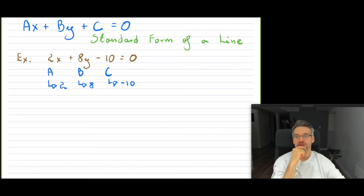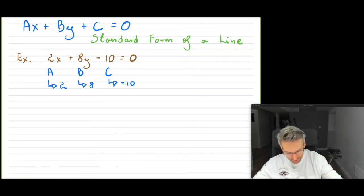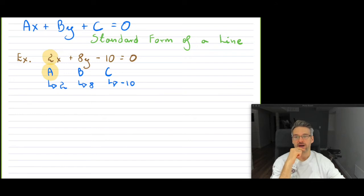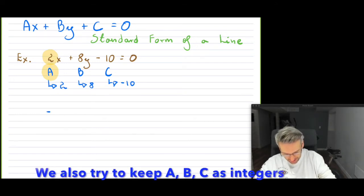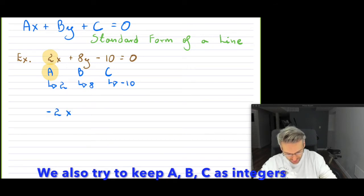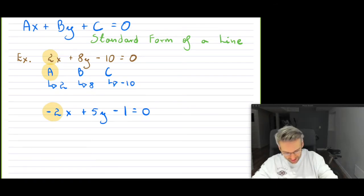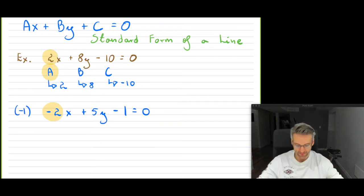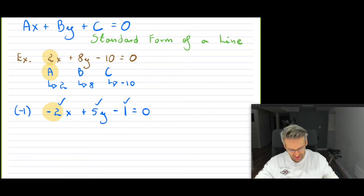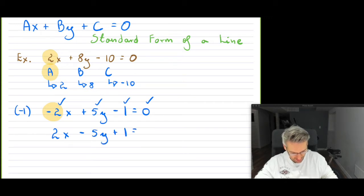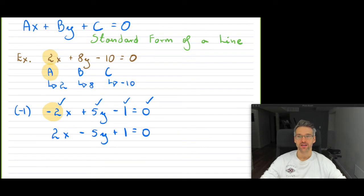One thing you should know in standard form is that we always make sure your A is positive. You wouldn't be able to leave it as something like negative 2X plus 5Y minus 1 equals zero. If you notice that your A is negative, simply multiply by negative 1 — multiply the entire equation by negative 1. All variables will change except the zero, which stays zero. So you would get 2X minus 5Y plus 1 is equal to zero. Notice the sign changes. In standard form, we keep A positive.